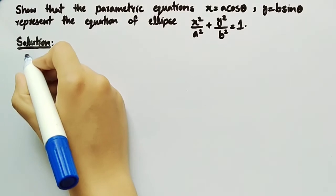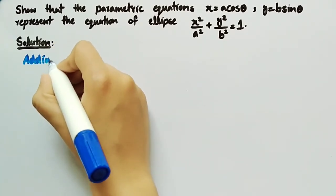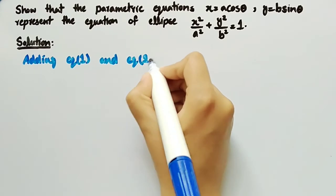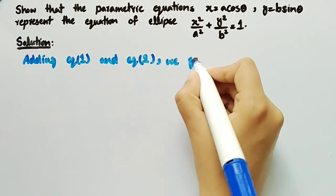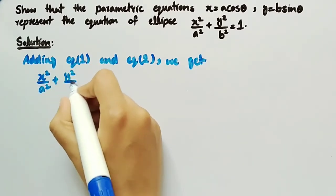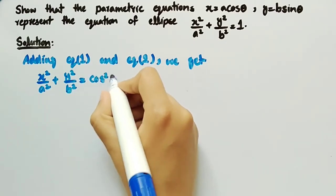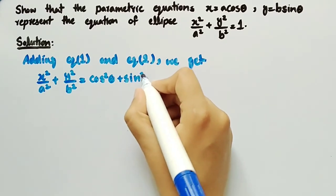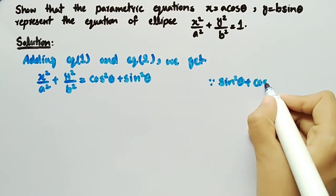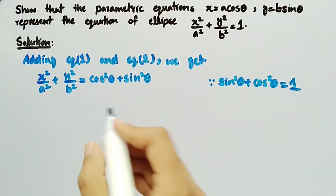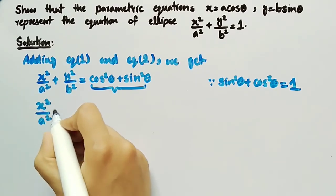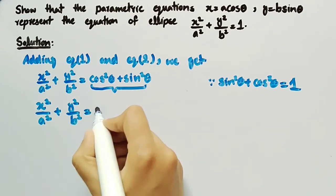Now by adding equation one and equation two, we get x²/a² + y²/b² = cos²θ + sin²θ. From trigonometric identities, we know that sin²θ + cos²θ = 1, so we can replace this term by one and write it as x²/a² + y²/b² = 1.